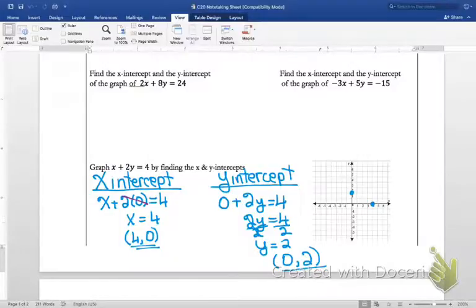Then I'm going to use my line tool and I'm going to draw, this time I made a skinny line, through my x and my y intercepts. That is how you would graph an equation using x and y intercepts.